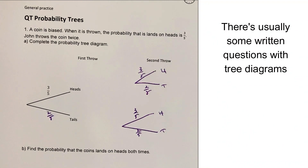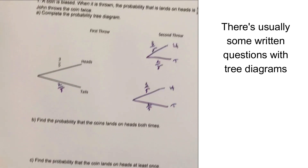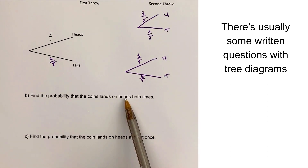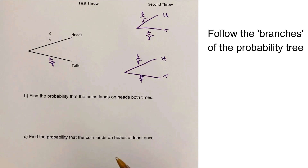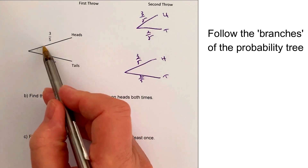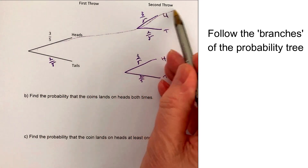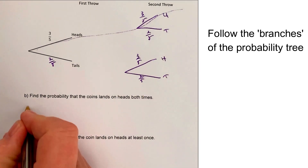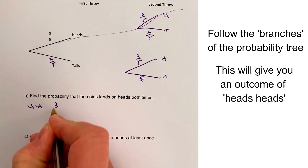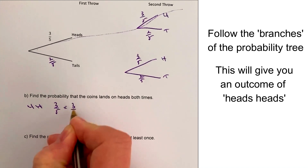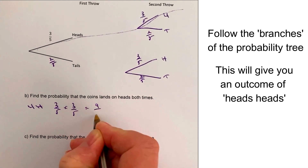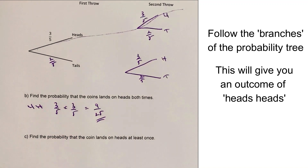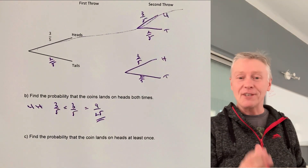Part A asks us to find the probability that the coin lands on heads both times. We're looking at the probability of heads-heads, which is 3 out of 5 multiplied by 3 out of 5, which is 9 out of 25. That would be the answer to that part of the question.